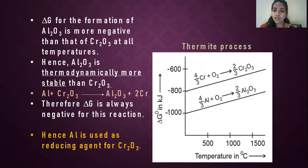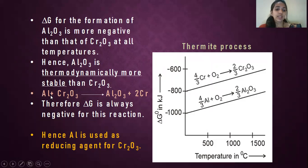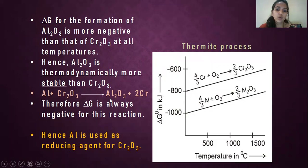Let us see why aluminium can act as a reducing agent in terms of thermodynamic concepts. This process is called the thermite process, in which aluminium is used as a reducing agent to reduce the oxide of chromium. In this reaction, aluminium and chromium oxide react with each other. The reducing agent removes the oxygen from the metal oxide — aluminium gets oxidised to form aluminium oxide, and chromium oxide gets reduced to chromium.